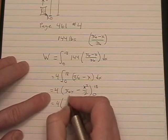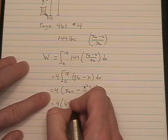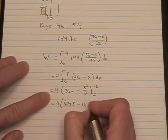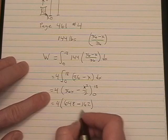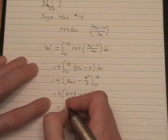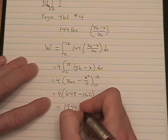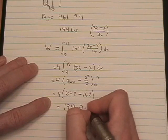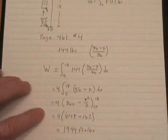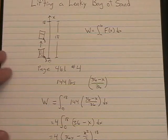I happen to know off the top of my head that 36 times 18 is 648. And 18 squared over 2 happens to be 162. And when you subtract those and multiply that out, we end up with 1944 foot-pounds of work to get that leaky sandbag up to 18 feet.